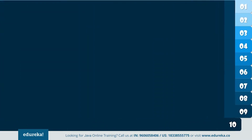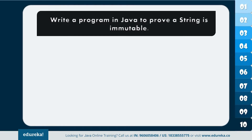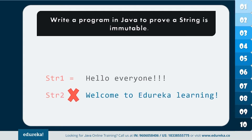Let's now understand the last program: write a program in Java to prove a string is immutable. We have to check whether the two given strings are immutable. String is immutable means you cannot change the object itself, but you can change the reference to the object. When you execute a particular statement, you're actually changing the reference to a new object, but the original value remains the same. So when you say string1 and string2, the value in string1 will remain the same, but when you change the reference of string2, it will take the reference of string1.